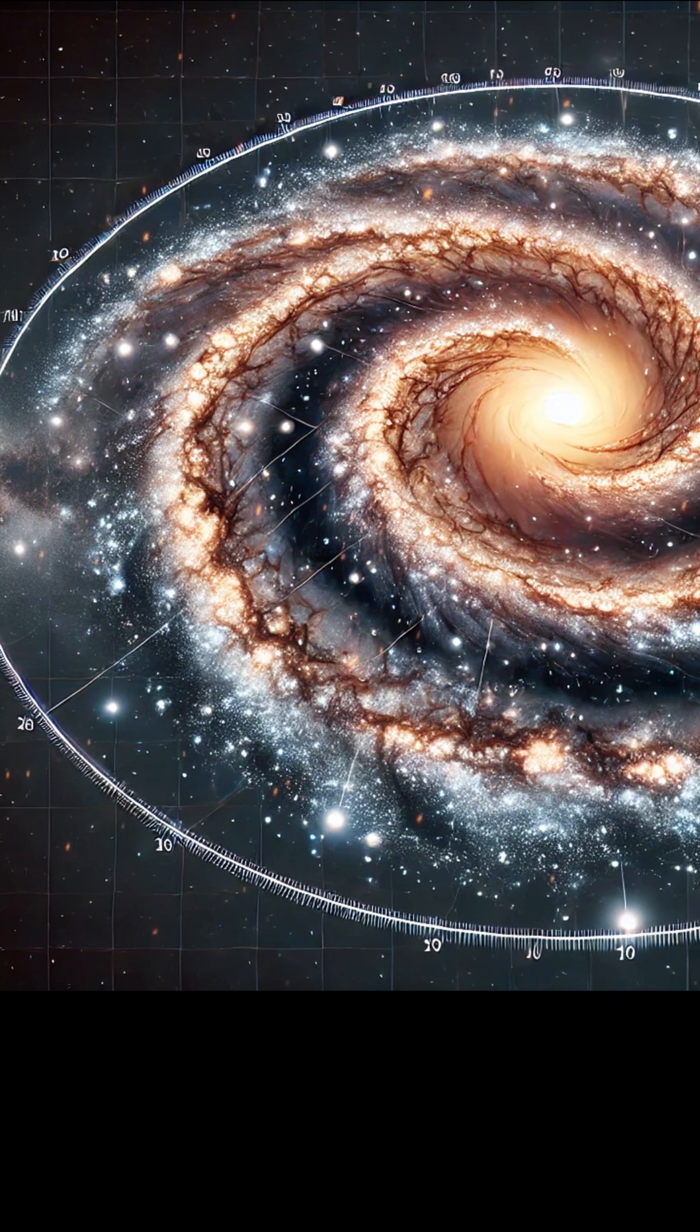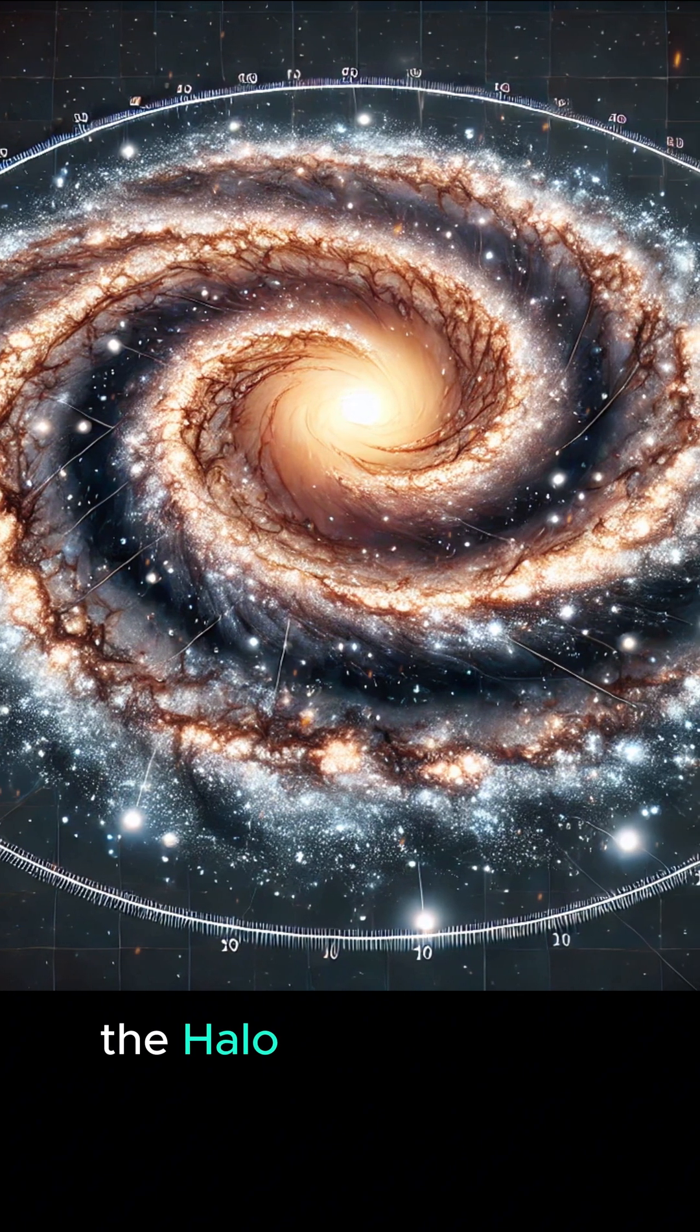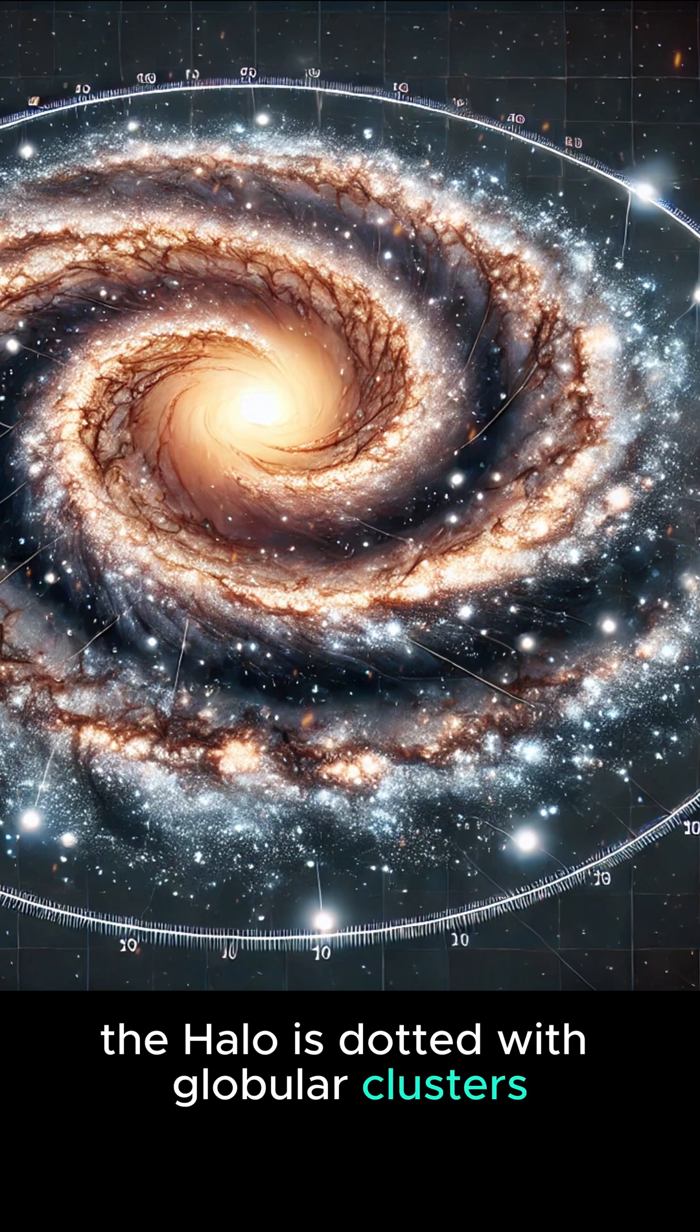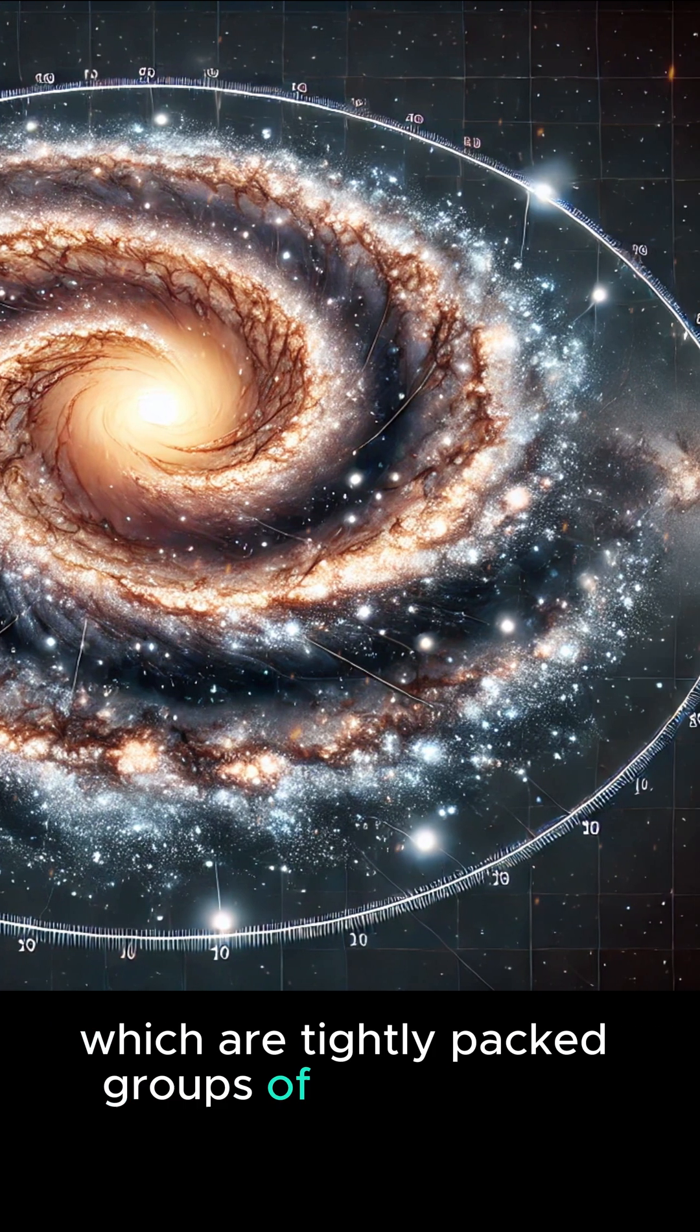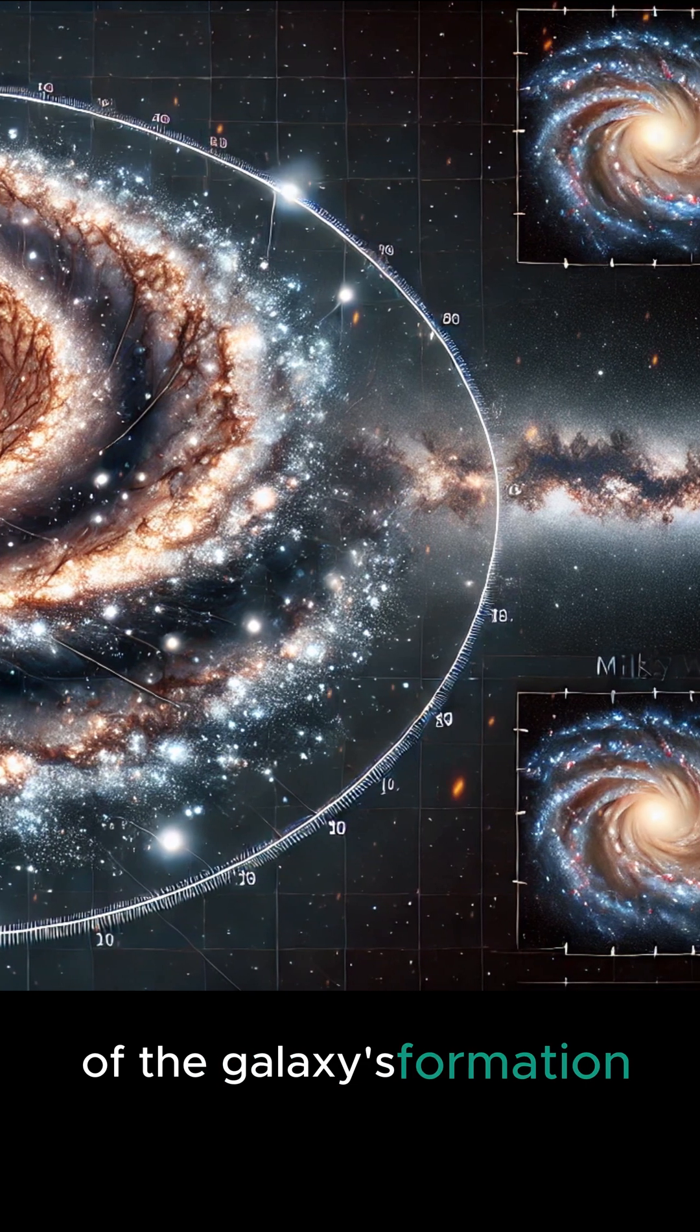a spherical region filled with older stars and dark matter. The halo is dotted with globular clusters, tightly packed groups of ancient stars that offer clues to the early stages of the galaxy's formation.